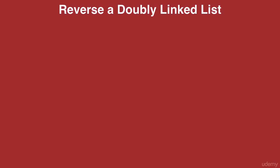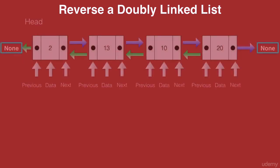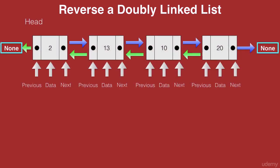Hello and welcome to this lecture in which you will learn how to reverse a doubly linked list. Let's take an example of a doubly linked list with four nodes. We have the head node with data 2, the next of 2 pointing to 13, the next of 13 pointing to 10, the next of 10 pointing to 20. The previous of 2 points to none and the next of 20 points to none, marking the beginning and end of the list respectively.